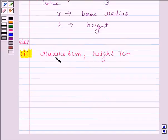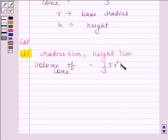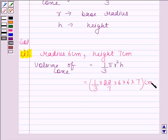We know the value of r and h so we can easily find the volume of cone. We know that volume of cone is equal to 1/3 πr²h. By substituting the values of π, r and h we get 1/3 × 22/7 × 6 × 6 × 7 cm³.